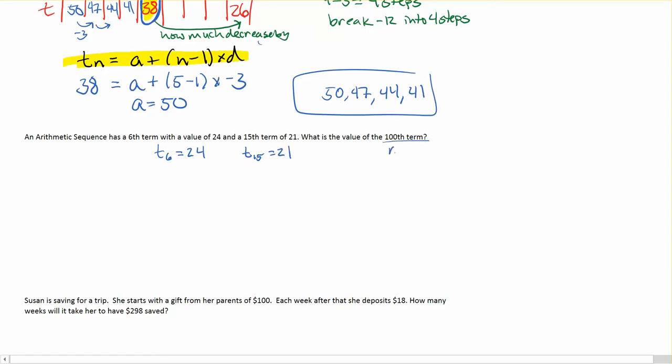Okay, so that means n equals 100, and what I'm trying to find is the value of the 100th term, so I'm looking for the t. So if we think about our formula, tn is equal to a plus n minus 1 times d. I don't know d, I don't know a, but I do have some other information that I can use. But again, a and d are needed, so I've got to figure out what they are.